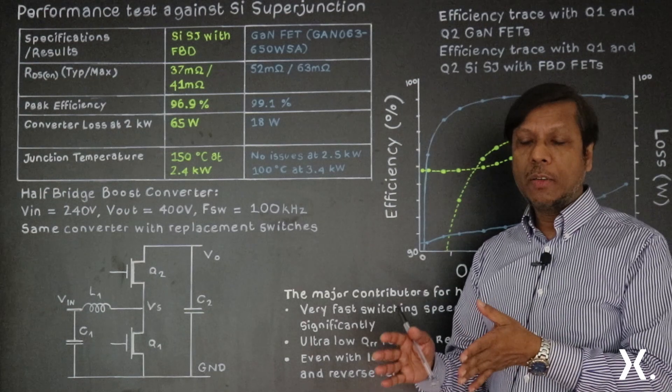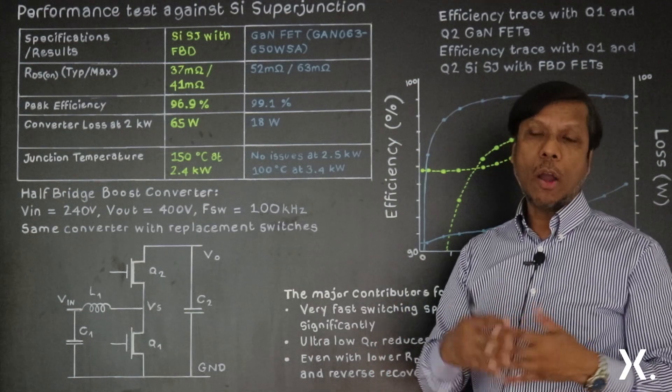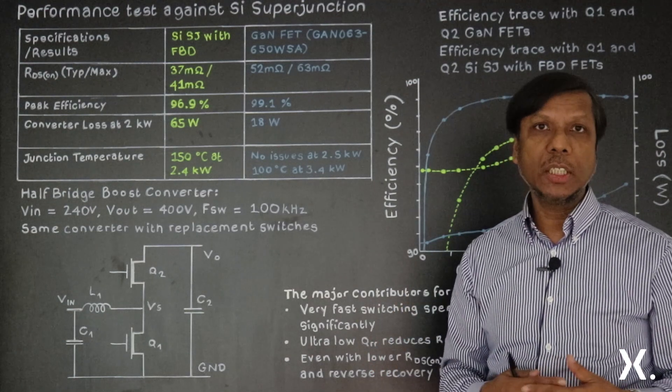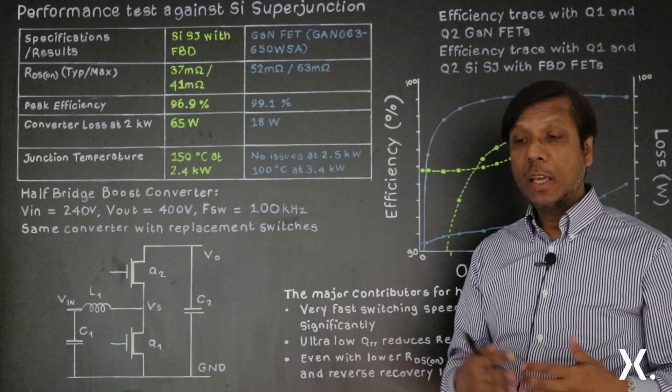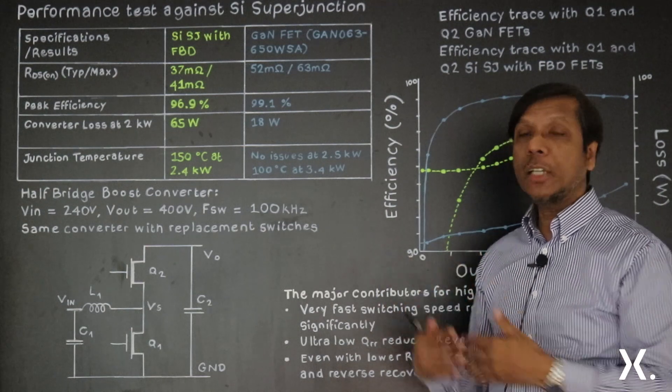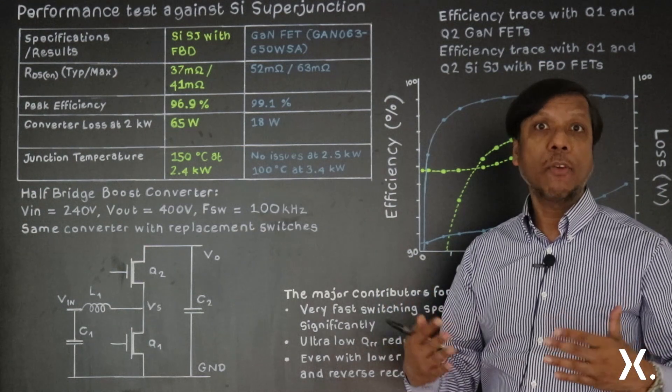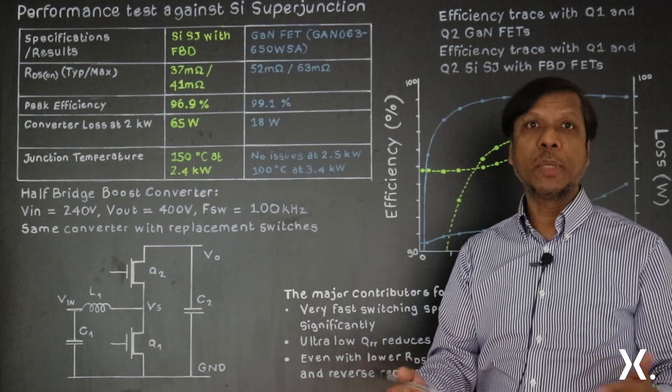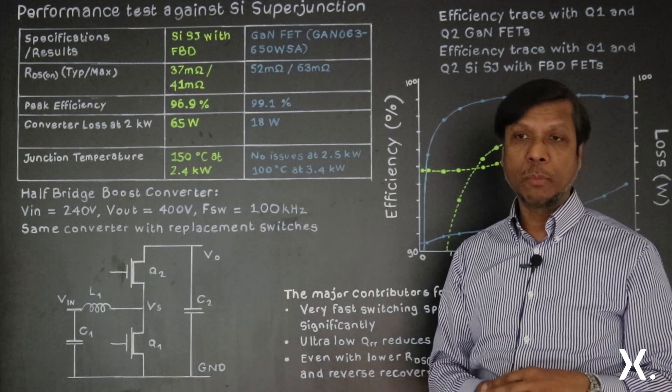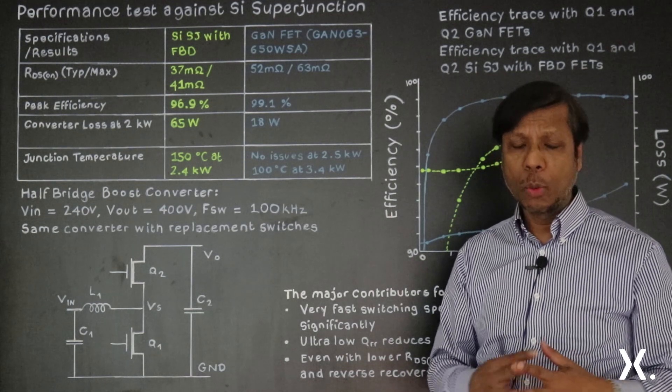On the other hand, gallium nitride FETs, GaN-on-silicon technology, are bringing a significant performance advantage over silicon. Even the early gallium nitride FETs, which are not matured enough yet, are already outperforming silicon-based topologies and silicon-based half-bridge performance in a big way.